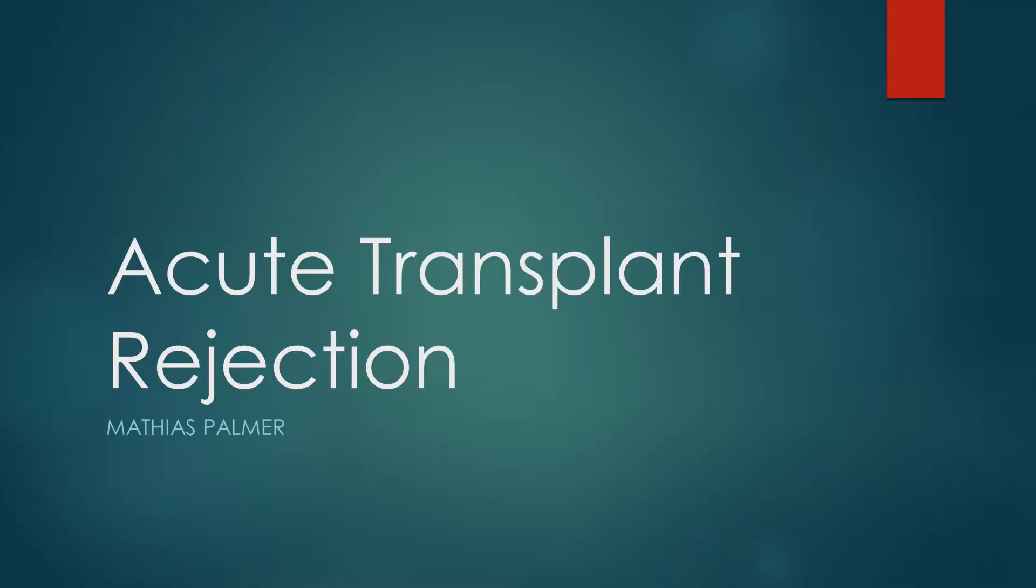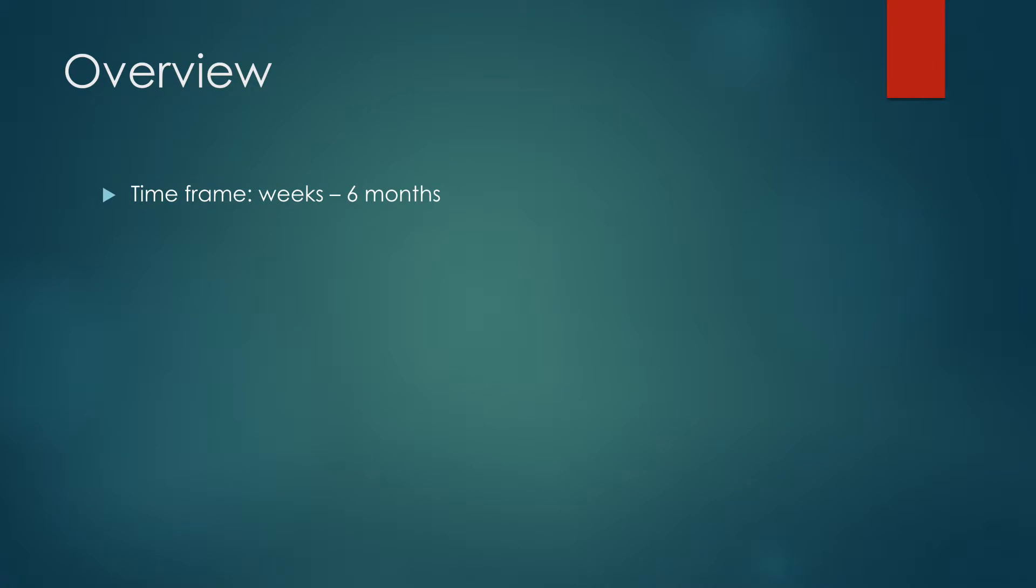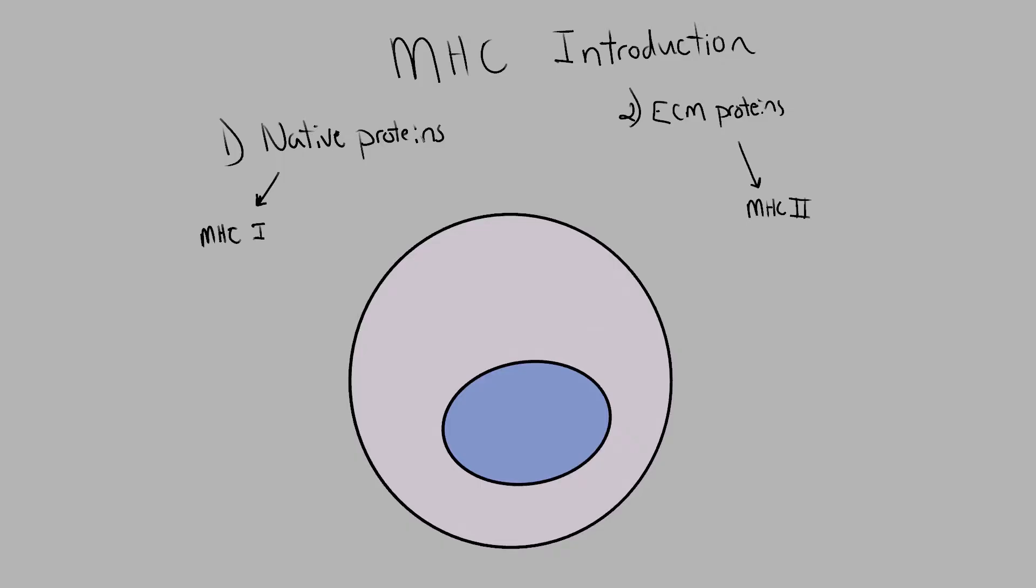The second type of transplant rejection is acute rejection. Acute transplant rejection occurs within 6 months and is a type 4 hypersensitivity reaction mediated by differences in MHC between the donor and the recipient.